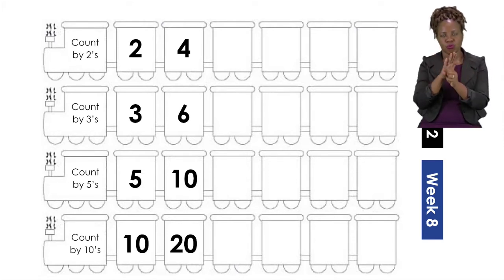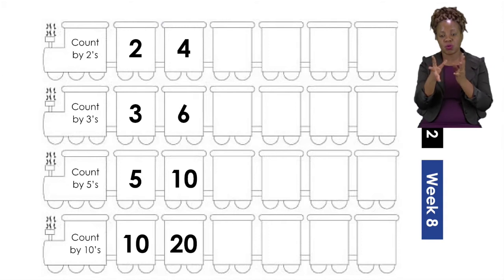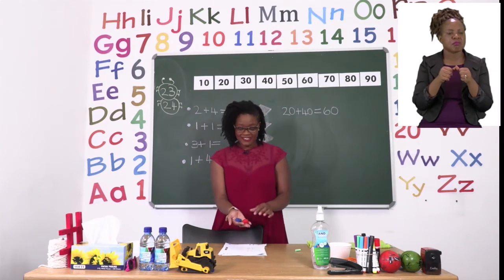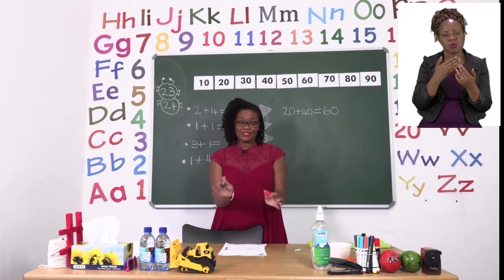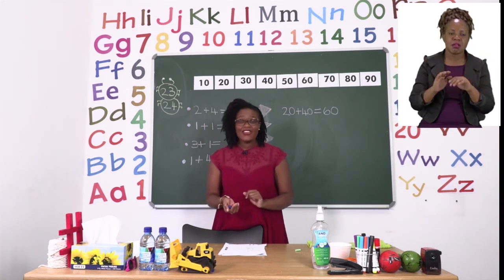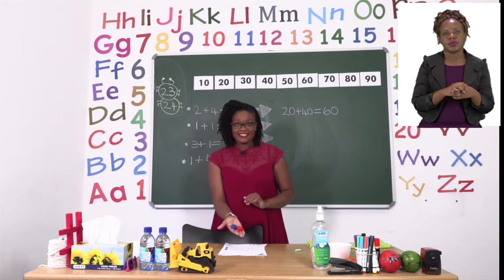Let's start with the first one where we are counting by 2's. Now they have given us the first one which is 2 and 4. So we are going to complete it together. Let's take a look at the counters. Now remember, you can use anything for counters boys and girls. I am using bottle tops but you can use colours, you can use pencils, you can even use stones.